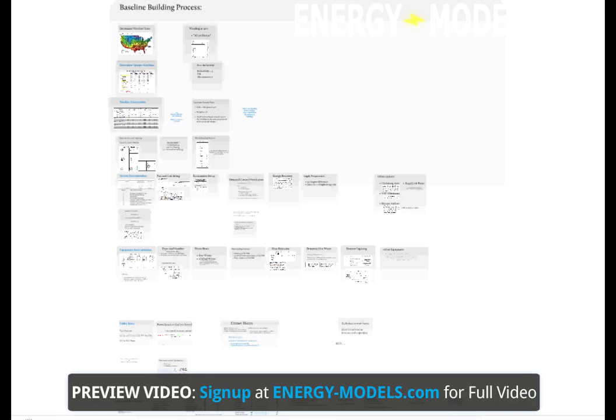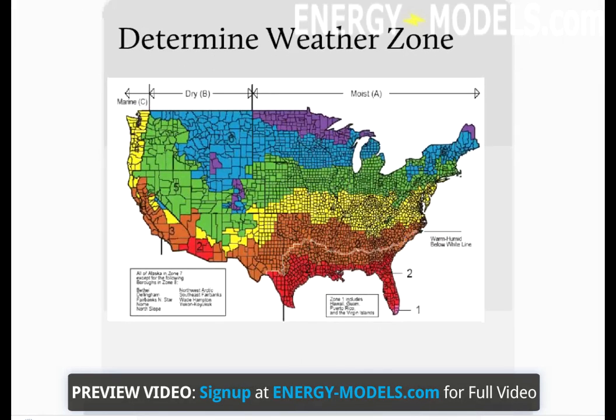Location is always an important factor, and LEED is no exception to this. The first thing we need to determine when starting a LEED project is the climate zone. In this climate zone map of the US, you can see the climate zones for each county in the United States. Of course, these are listed by state and then county in Appendix B of 90.1.